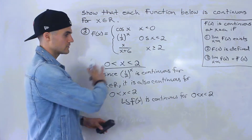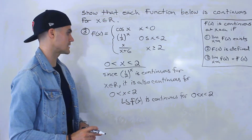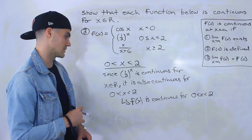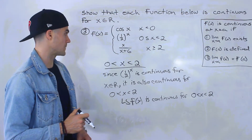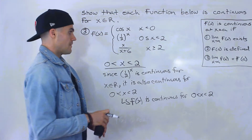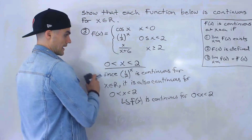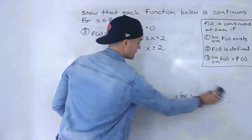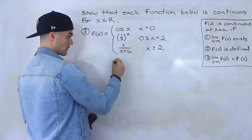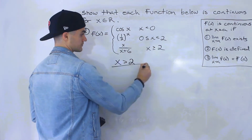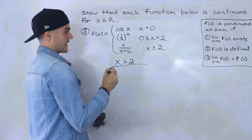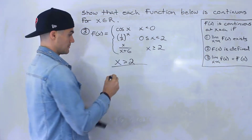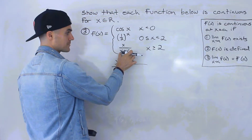I know it seems a bit tedious writing all these statements, but if your teacher wants it this specific, we have to go through it. Next, for x values greater than two, the piecewise function is defined by x over (x+6).